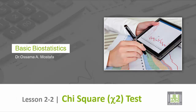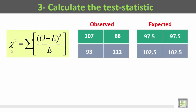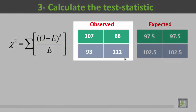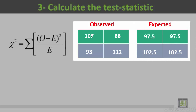Now let us calculate the test statistic according to the chi-square equation. The chi-square is equal to sigma of (observed minus expected) squared divided by the expected. These are the observed values and these are the expected values. For A, the observed is 107 while A expected is 97.5.